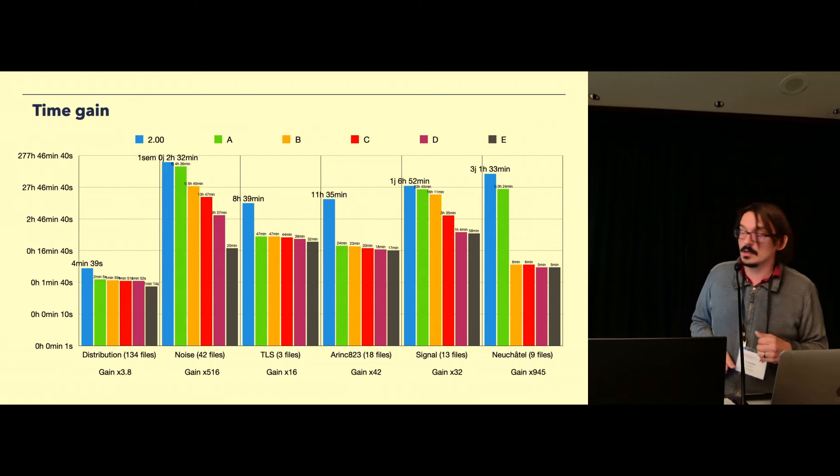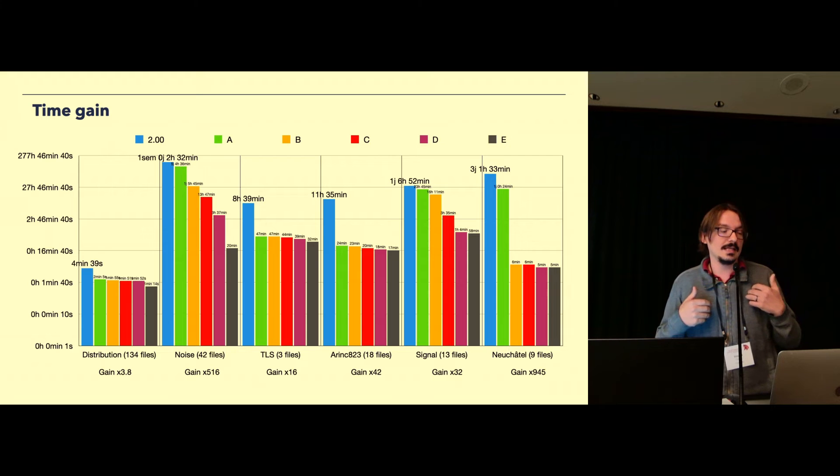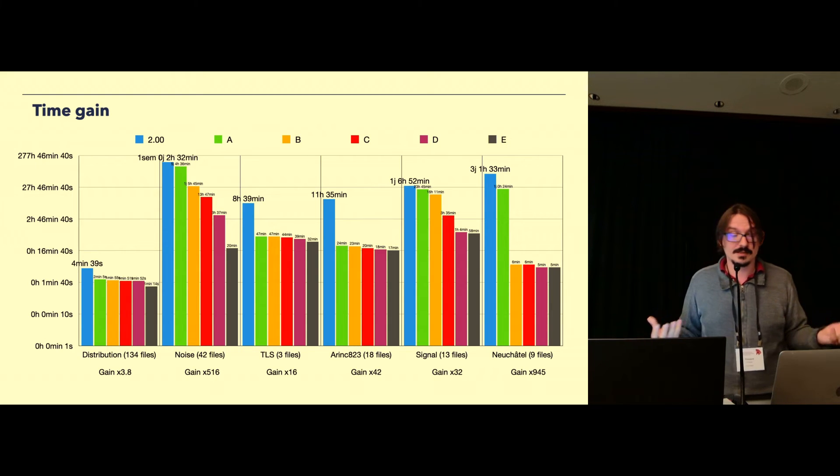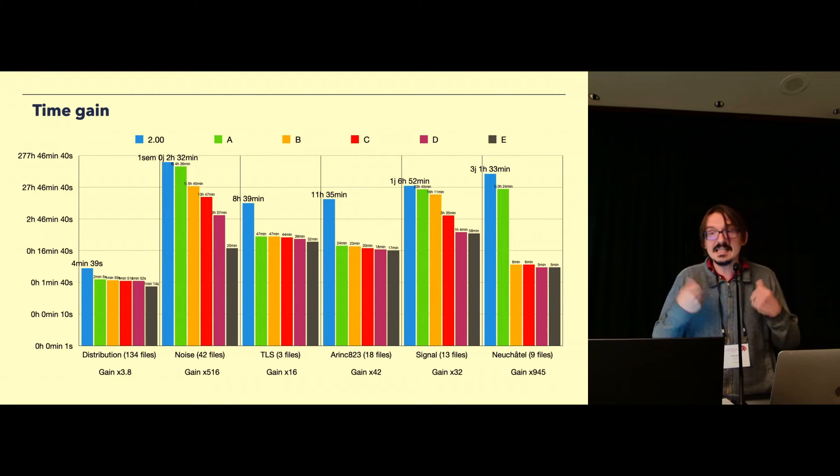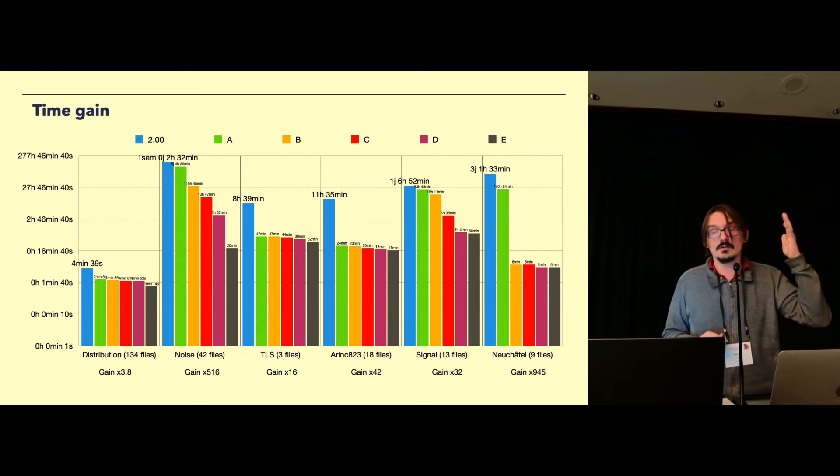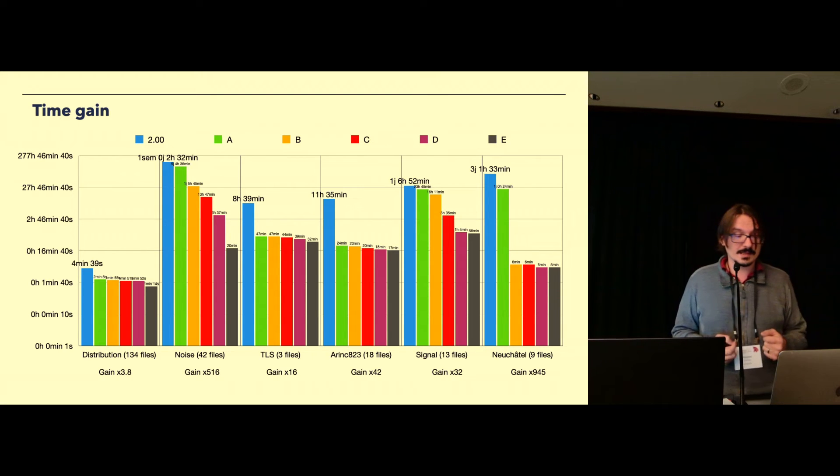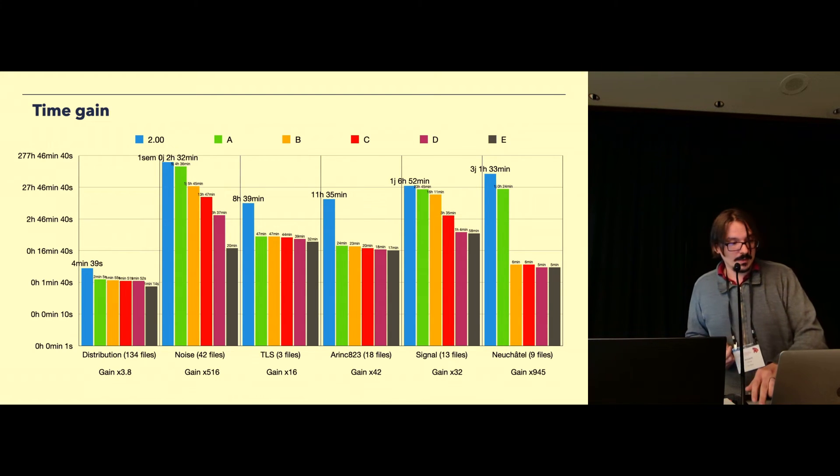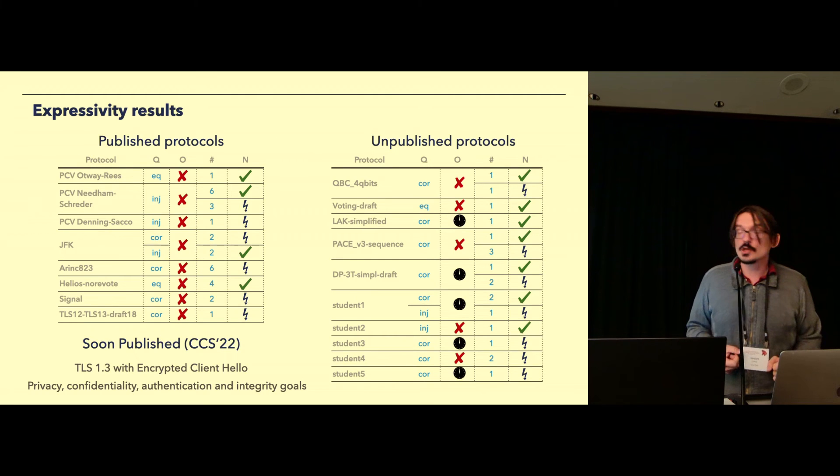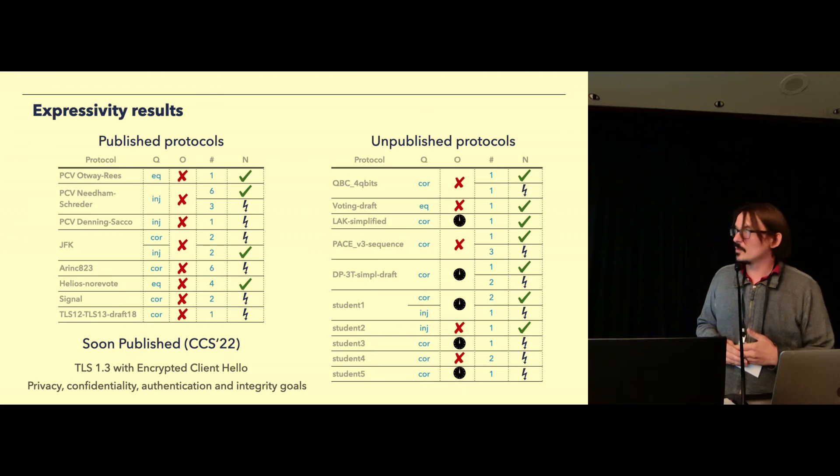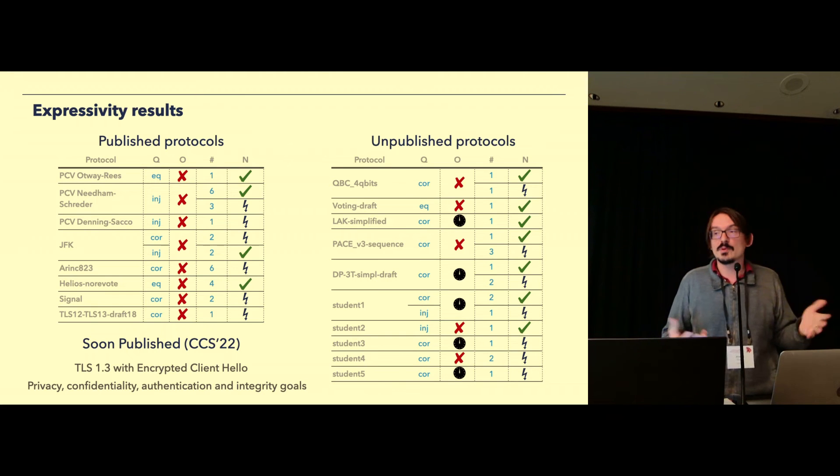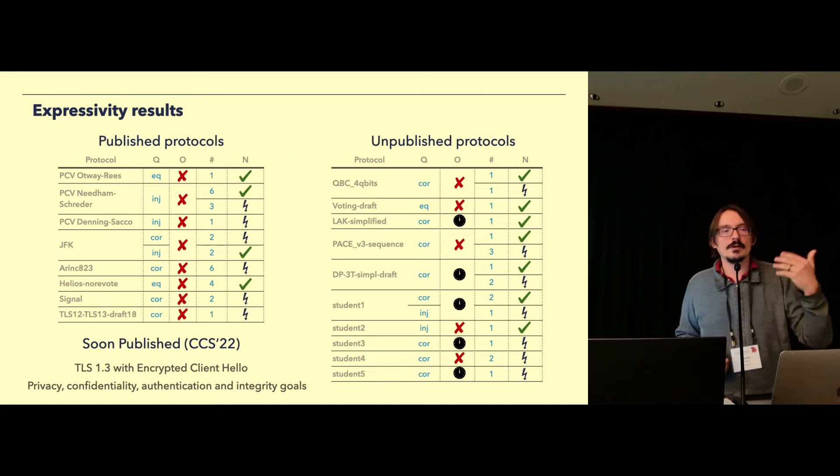For example, in the Neuchâtel protocol, which yielded a 900 times faster speedup of verification time, most of the speed gain were from the translation of protocol to Horn clauses.